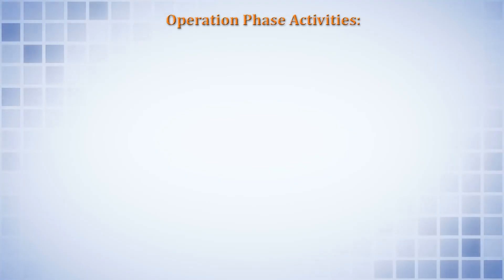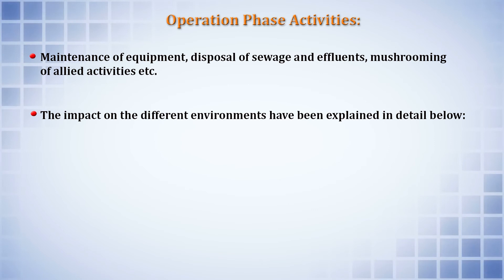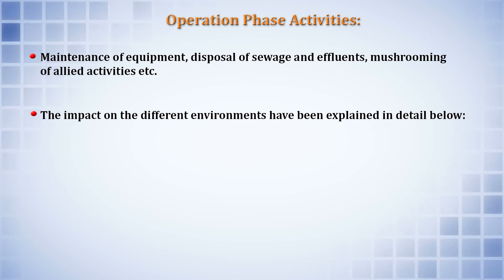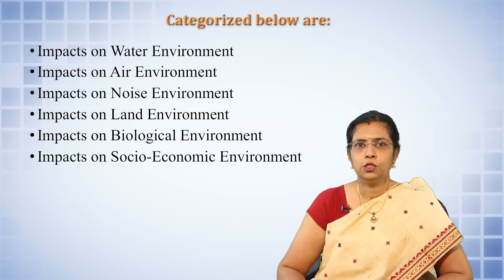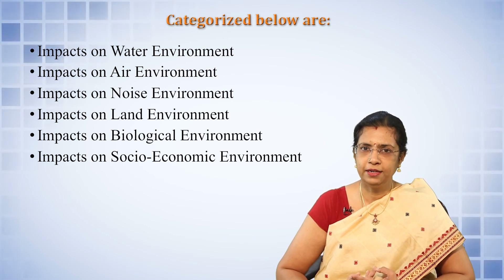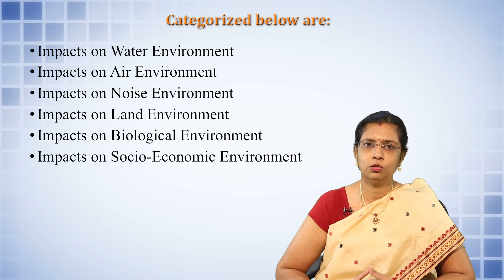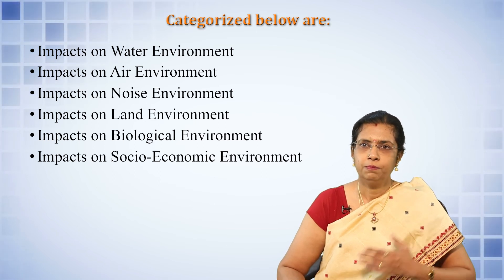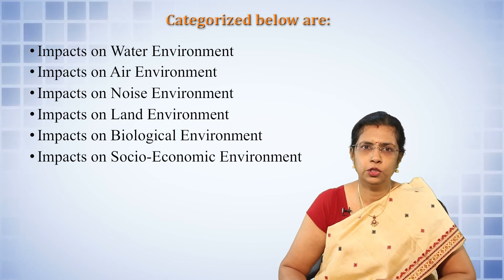Operation phase activities include maintenance of equipment, disposal of sewage and effluents, mushrooming of allied activities, and impacts on different environments. These impacts can be categorized as impacts on the water environment, air environment, noise environment, land environment, biological environment, and socio-economic environment, all of which need to be written down in the project proposal.